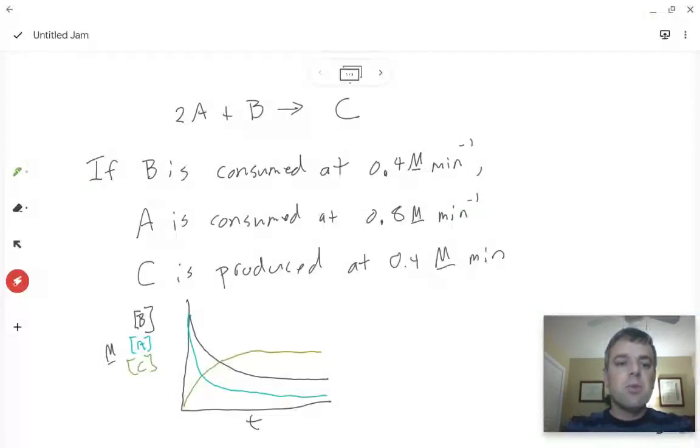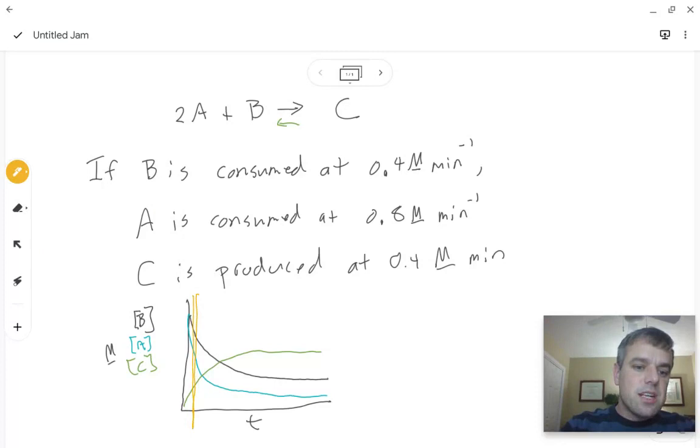Because if we start with just A and B in a flask together and we're trying to make C, well, if there is no C to start with, then even if this reaction were reversible, well, it's not going to matter in the very early stages.